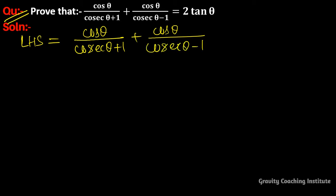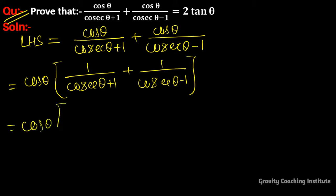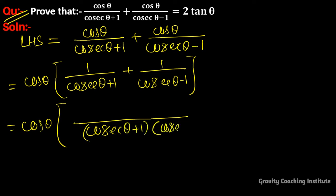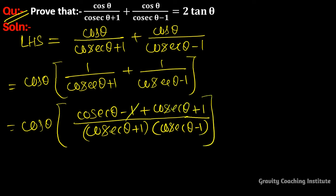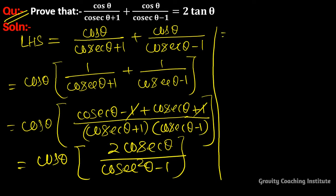Taking the common denominator (cosec θ + 1)(cosec θ - 1), the numerator becomes cos θ · (cosec θ - 1) + cos θ · (cosec θ + 1). The +1 and -1 cancel, leaving 2 cos θ · cosec θ over (cosec²θ - 1), which equals 2 cosec θ upon cos θ.